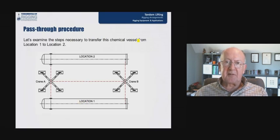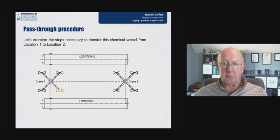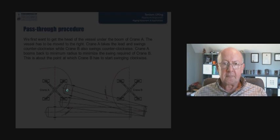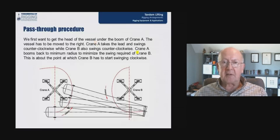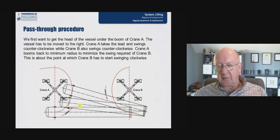Let's examine the steps necessary to transfer this vessel from location 1 to location 2. You first want to get the head of the vessel under the boom of crane A, so it has to pass around this path here. The vessel has to be moved to the right to allow this to happen. So crane B has to first swing in this direction, as crane A swings in that direction.